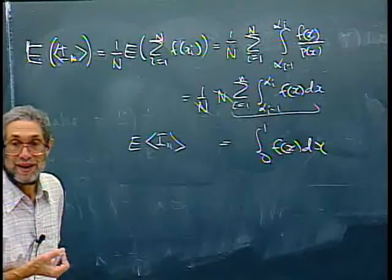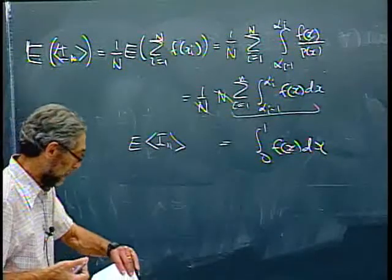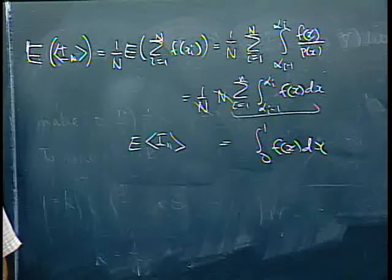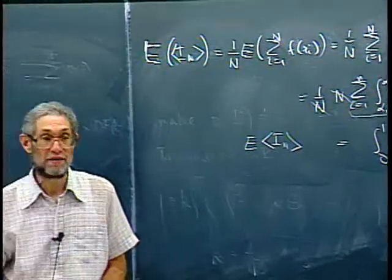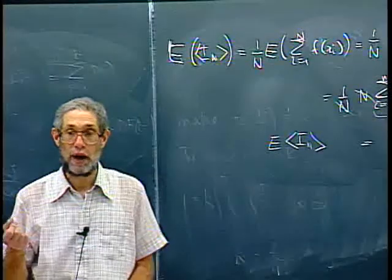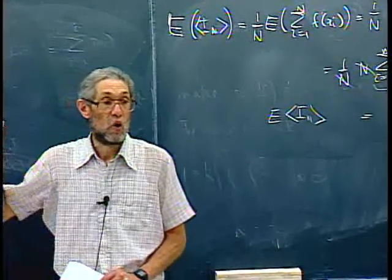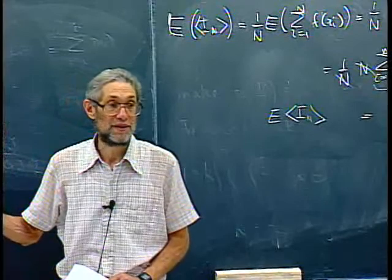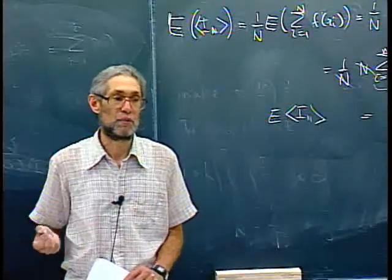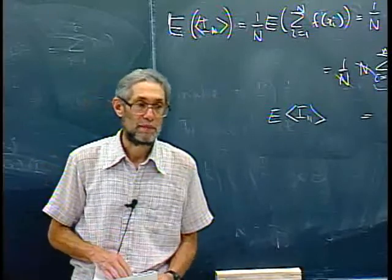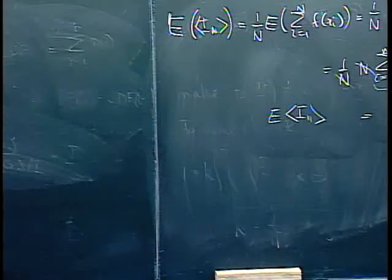We also want to show the variance is less than with purely random sampling. By my watch I'm not going to have time to complete the proof today. I'll try to save it for the end of next class — but intuitively, by constraining samples to sub-intervals, we prevent clumping and reduce variance. That's the idea of jittered sampling.